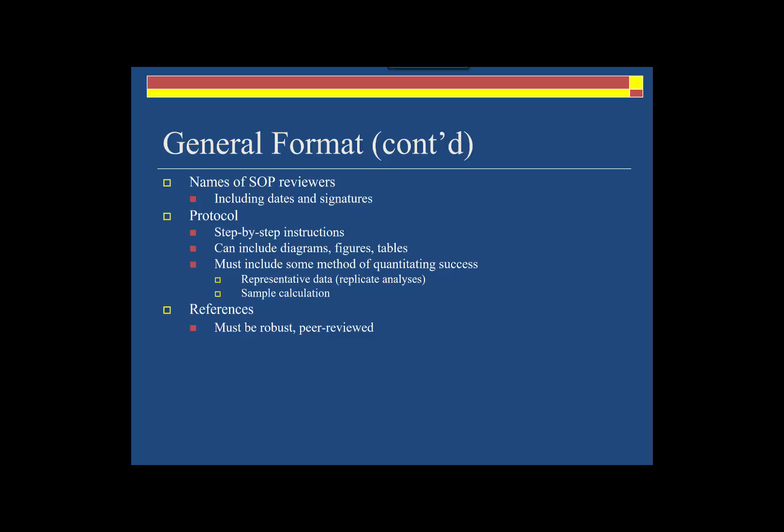SOPs should be reviewed and revised regularly. When they're reviewed, the date of the revision and the revision number should be specified. The next section is the heart of the document, and that's the protocol itself. The protocol should detail everything from turning on the instrument and preparing the samples through to analysis and interpretation of any data obtained. Figures and tables are extremely helpful, and so are sample calculations. More is better when writing an SOP.